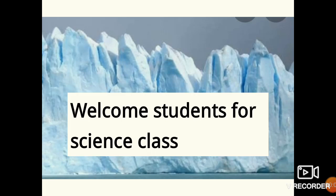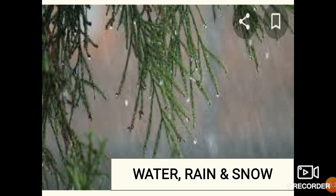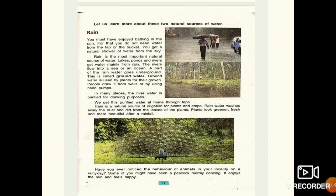Welcome students, this is second period science class. Today we are doing chapter number 10 on water. Yesterday we learnt about why water is necessary for us and the local sources of water. Today we will discuss the main natural source of water — rain and snow. Our topics for today are: rain, a major source of water on earth, and snow.